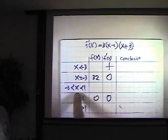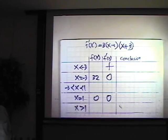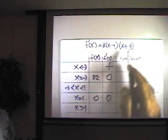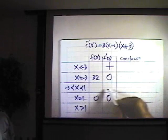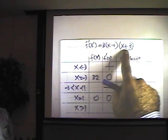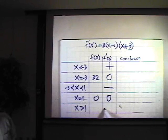Then on this interval, if I pick the test point 0, this factor will give negative, this factor positive, their product is negative. Finally, on the interval from 1 to infinity, this factor will be positive, this factor will be positive, their product is positive.